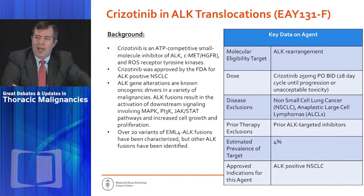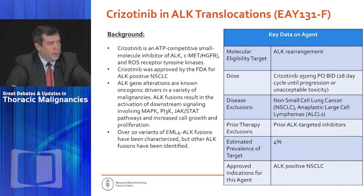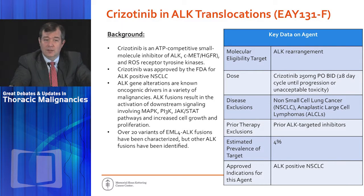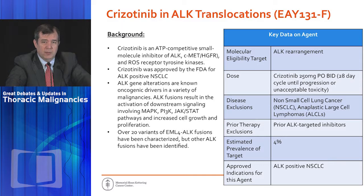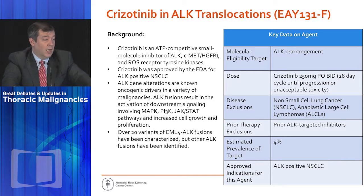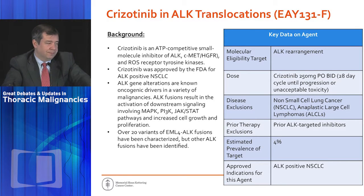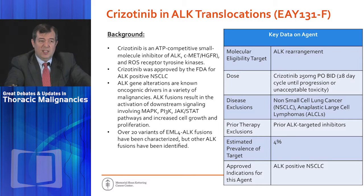One arm is Crizotinib in ALK-positive cancers. You'll notice that patients with lung cancer are excluded from this arm, as are patients with anaplastic large cell lymphoma — those have been evaluated in other trials. This design is trying to find uncommon things: the rare patient with colorectal cancer who has an ALK rearrangement, for instance. When we do next-generation sequencing in practice and see uncommon findings, this trial helps us figure out what to do with them.